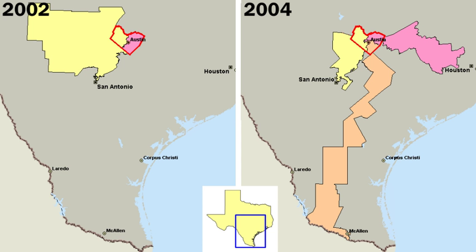The United States Constitution does not mention political parties, primarily because the Founding Fathers did not intend for American politics to be partisan. In Federalist Papers No. 9 and No. 10, Alexander Hamilton and James Madison, respectively, wrote specifically about the dangers of domestic political factions. In addition, the first President of the United States, George Washington, was not a member of any political party at the time of his election or during his tenure as president. Washington hoped that political parties would not be formed, fearing conflict and stagnation.